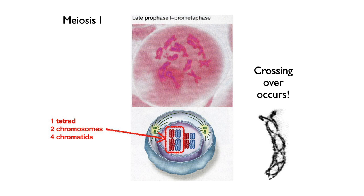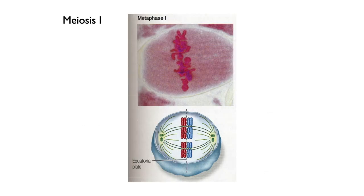Then we get into metaphase one. The spindle fibers are going to pull and tug from both sides and line up all the chromosomes at the metaphase plate. But notice in meiosis one, the homologues are still paired up — two chromatids linked to two more chromatids. We are not going to separate the chromatids yet. This is the reductional division — we're going to separate homologous chromosomes instead.